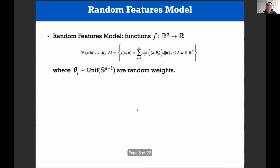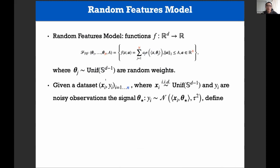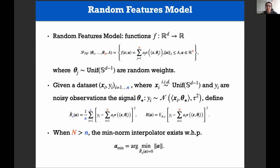The natural question is: what is the exact gap between the generalization error, uniform convergence, and a capacity-reduced uniform convergence over interpolators? We answer this in the random features model. The model has random weights theta_j for the first layer, which are kept fixed during training; only the second layer is trained. Two key parameters: N, the width (number of features), and A, the maximum norm allowed for the second layer. Labels y_i are noisy observations of a ground truth signal theta-star with noise level tau-squared.